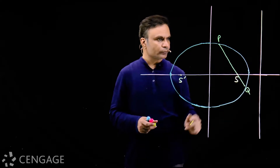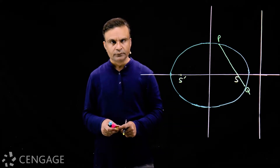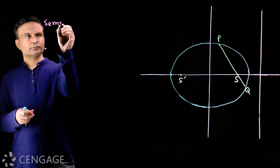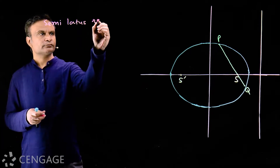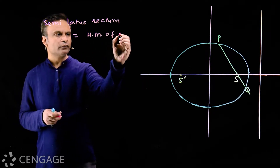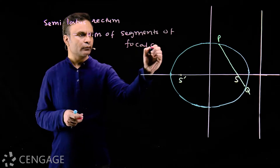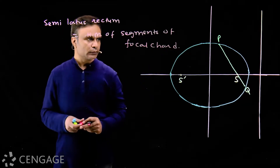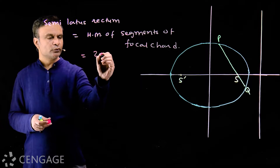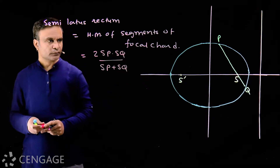Here P and Q are the endpoints of the focal chord, so PQ is the focal chord. SP and SQ are called the segments of the focal chord. The property is that the semi latus rectum is equal to the harmonic mean of the segments of the focal chord, where the segments are SP and SQ. So semi latus rectum equals two times SP multiplied by SQ divided by SP plus SQ.